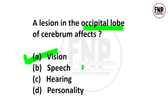अन्य lobes के functions: Temporal lobe — auditory function और olfactory function के लिए responsible. Parietal lobe — gustatory (taste) function और somatosensory areas. Frontal lobe — motor area. Previous exams में इन lobes के functions पूछे गए हैं, इसलिए याद रखिएगा: Vision = occipital, Auditory = temporal, Olfactory = temporal, Gustatory = parietal, Somatosensory = parietal, Motor = frontal.